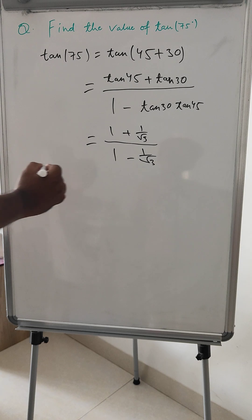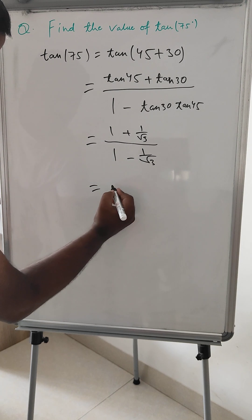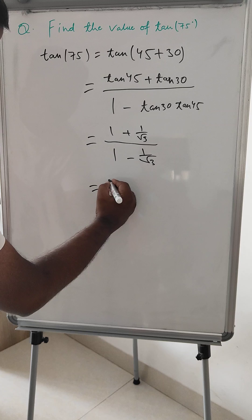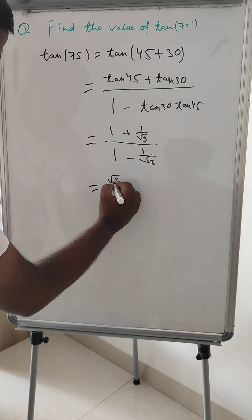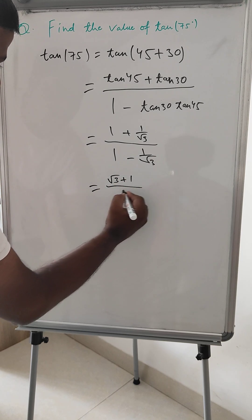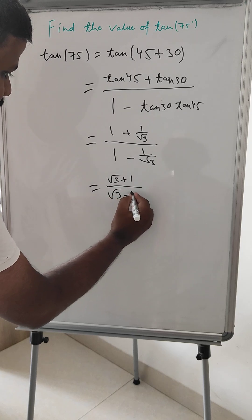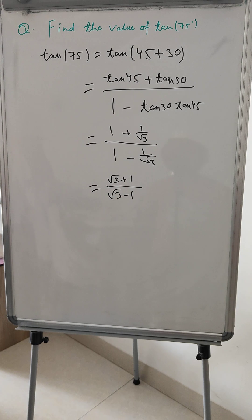Simplifying this, we can write it as (√3 + 1) divided by (√3 - 1). This is the value for tan 75.